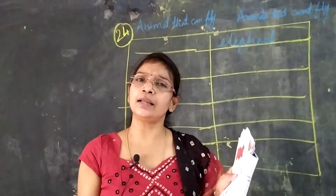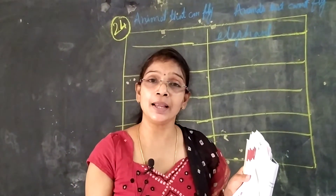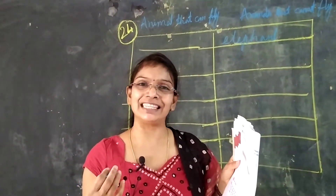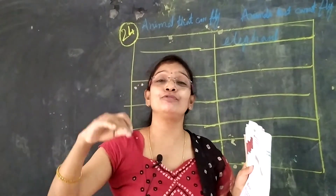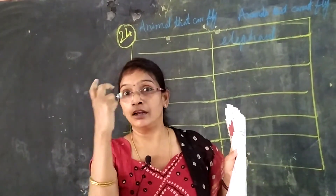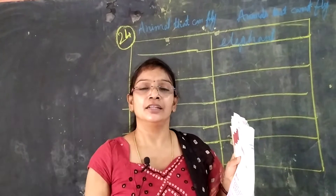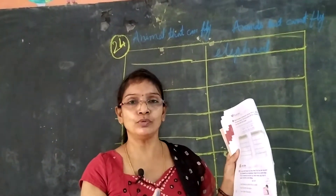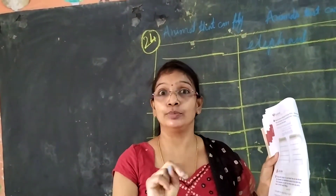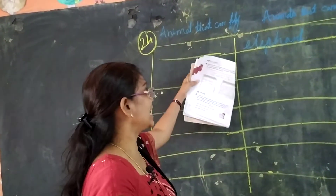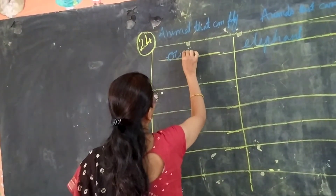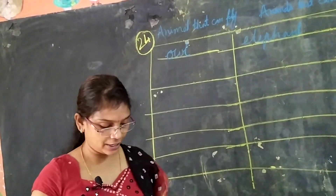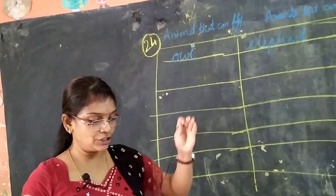Owl — owl is a bird. Birds have wings to fly. An owl has one beak and big eyes, two wings, and two legs. Because it has wings it can fly, so you write owl under 'animals that can fly.' Next is bee — honey bees make a buzzing sound. It is a very small insect and it can fly.